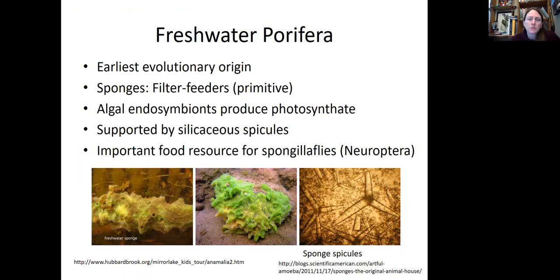They're very primitive in terms of body form. Interestingly, a lot of the freshwater sponges have algal endosymbiotes — algal cells that live within the sponge tissues. Those endosymbiotes photosynthesize, and then the sponge can utilize that photosynthate, so they share space and resources. They are supported by siliceous spicules, so they need silica to grow, and they grow these really interesting shaped spicules. In freshwater ecosystems, they're an important food resource for spongillaflies, which I'll talk about later.